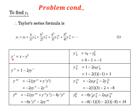From the differential equation y' = x - y², substitute x₀ and y₀: y₀' = x₀ - y₀² = 0 - 1 = -1. For the second derivative, differentiate: y'' = 1 - 2y · y'. Substituting y₀ = 1 and y₀' = -1: y₀'' = 1 - 2(1)(-1) = 3.